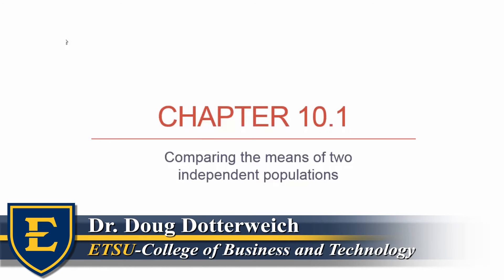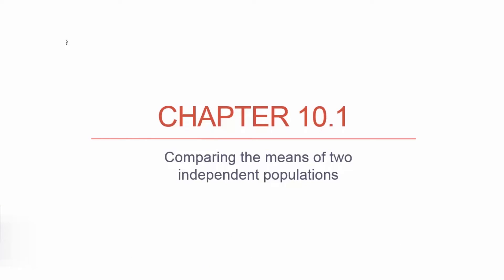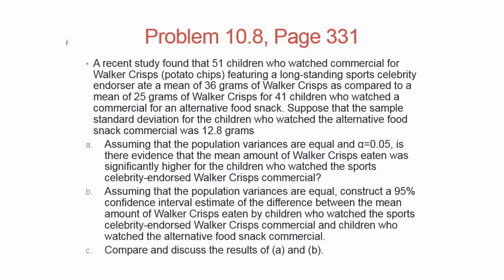This is video example 10.8 and this problem deals with two independent populations. We're interested in the means for those two populations and we want to compare those means. It's from section 1 of chapter 10. It's found on page 331, problem 8.10.